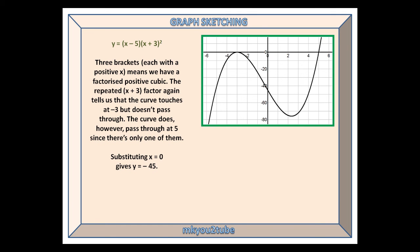Our sixth and final curve is y equals (x minus 5) times (x plus 3) squared. Three brackets, each with a positive x, means we have a factorised positive cubic. The repeated x plus 3 factor again tells us that the curve touches at minus 3, but doesn't pass through.